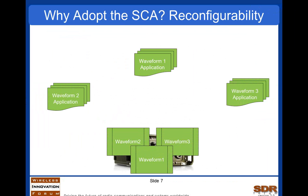What the SCA provides, thanks to its core framework and the way this core framework harnesses the equipment, is the capability to have the radio successively execute different waveforms — switching from waveform 1 to 2, 2 to 3, back to 1 — depending on the missions that need to be realized by the user of the radio.